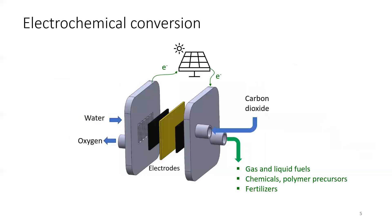That is the electrochemical conversion process — a process that uses electricity to drive a chemical reaction. In this process, we can use carbon dioxide and water as the feedstock. We use electrical power to break down these molecules into carbon, oxygen, and hydrogen atoms, and then combine them to produce the product that we want. For example, we can produce methanol or ethanol to be used as fuels. We can make ethylene as a precursor for plastic production. We can even make urea, a fertilizer, if we know how to combine carbon dioxide and nitrogen.